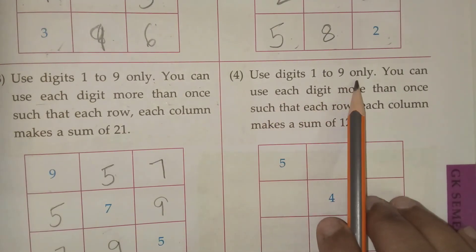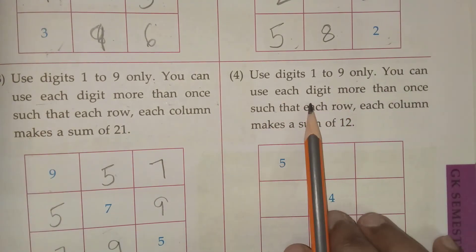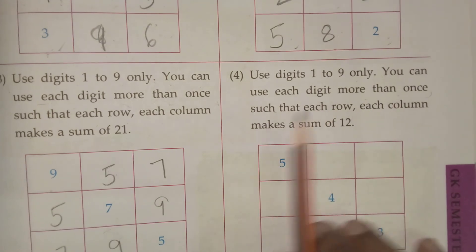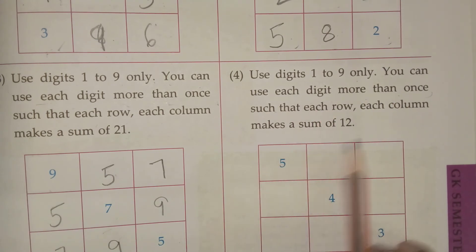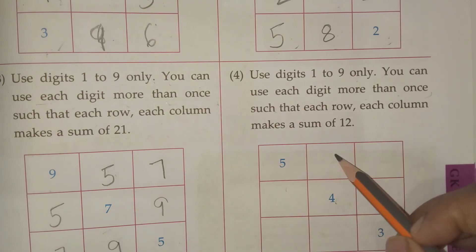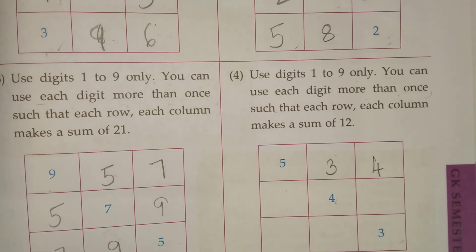Use digit 1 to 9 only. You can use each digit more than once such that each row column makes number 12. See? 5, 4, 3. 4 plus 3, 7. 7 plus 5, 12. Now here 5 is there. Here 4 is there. So I can't use again 4. Now see 3, 4.